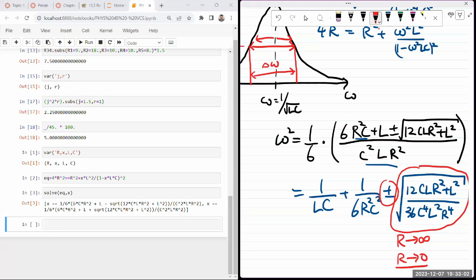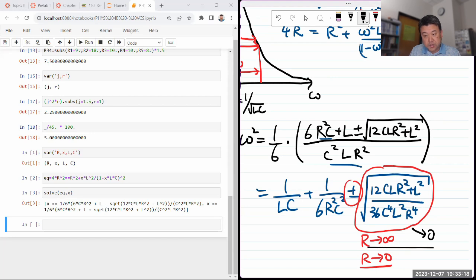Those are kind of two limiting behaviors that's useful to look at. And this whole combination of quantity goes to zero as R goes to infinity, because you have this R to the fourth power in the denominator that overwhelms everything there. So as R goes to infinity, this thing that determines the width goes to zero, which means at larger resistance values, your resonance becomes more sharply peaked. That means your Q factor increases with increasing resistance.